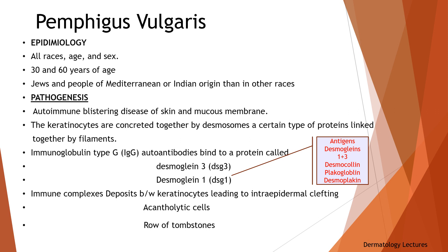Intracellularly, the cadherins bind to plakoglobin, plakophillin, and indirectly to desmoplakin, forming the desmosomal plaque. The desmosomal plaque interacts with the keratin intermediate filaments. In pemphigus vulgaris, IgG autoantibodies bind to a protein called desmoglein-3, found in desmosomes in the keratinocytes near the bottom of the epidermis. That causes separation between the keratinocytes, leading to tombstone appearance, and the space is replaced by fluid forming the blisters.